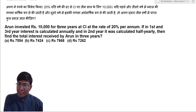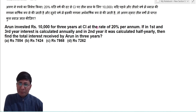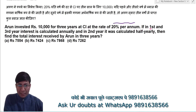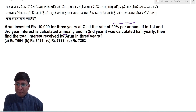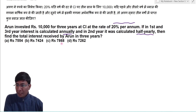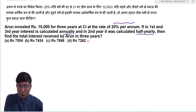Arun invested 10,000 for 3 years at compound interest rate of 20% per annum. In the first and third year, interest is calculated annually, and in the second year it was calculated half yearly. Find the total interest received by Arun in 3 years.